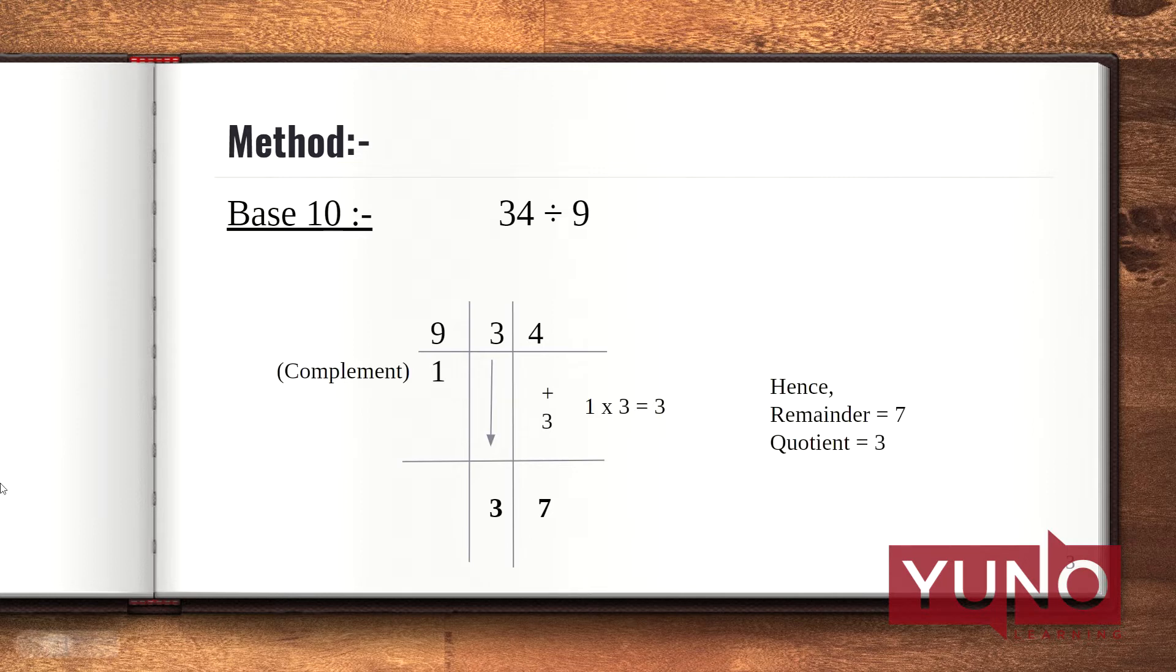First example we have, we need to divide 34 by 9. Here base is 10, and the first step is that we need to divide the digits of the dividend by the number of zeros in the divisor. Here, the number of zeros 10 has is 1. Hence, we have divided the digits of the dividend by 1 digit.